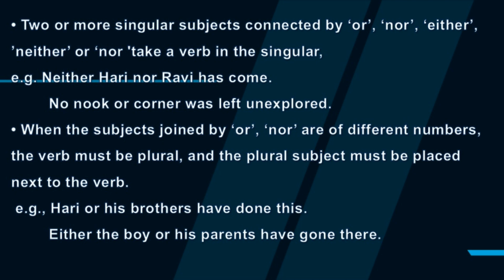When the subjects joined by 'or' or 'nor' are of different numbers, the verb must be plural and the plural subject must be placed next to the verb. Example: Harry or his brothers have done this. Either the boy or his parents have gone there.